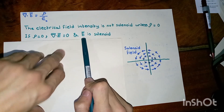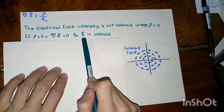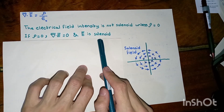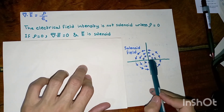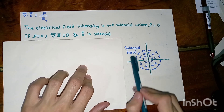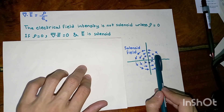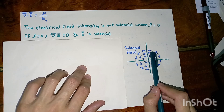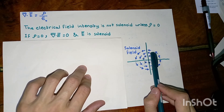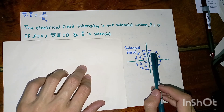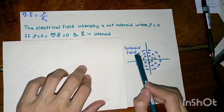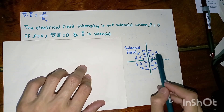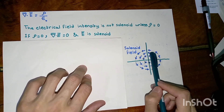Accordingly, the electrical field intensity vector is solenoidal. What we mean by a solenoidal field is that no point in this region is considered as a source nor a drain to the electrical field intensity. All the points in this region simply pass the vector field through.